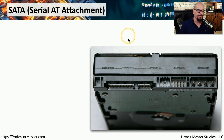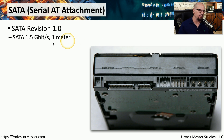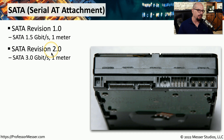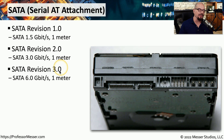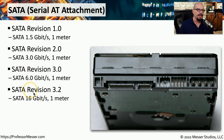One very common interface type for our storage devices inside of our laptop computers and desktop computers is SATA, which stands for Serial AT Attachment. There have been many different SATA versions throughout the years. SATA Revision 1.0 transferred data at 1.5 gigabits per second over a 1 meter cable. Revision 2.0 doubled that speed to 3 gigabits per second. Version 3.0 doubled it again to 6 gigabits per second, and SATA Revision 3.2 increased the speed to 16 gigabits per second over that 1 meter data cable inside of your computer.